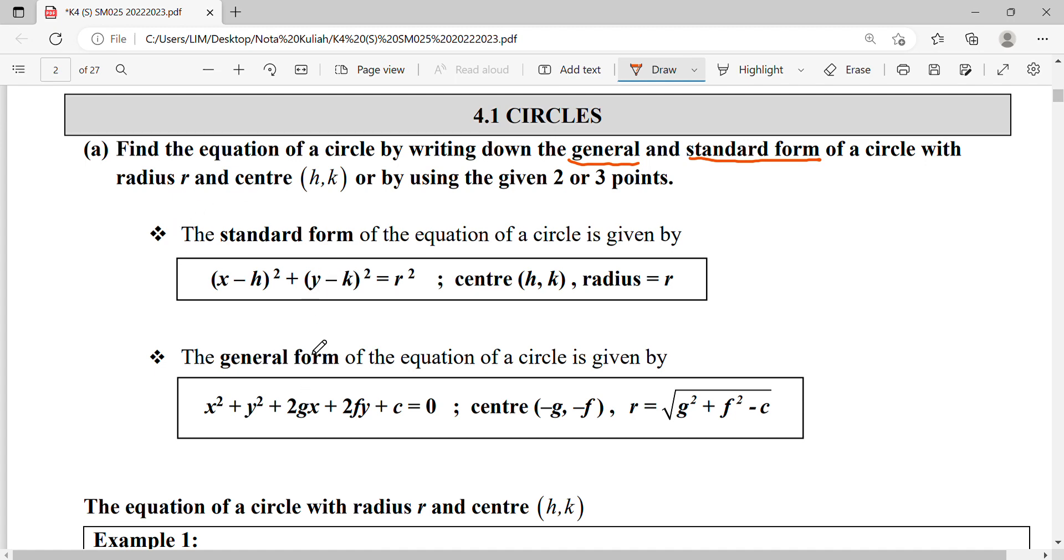With radius, symbol is r, center is (h,k), or by using two or three points. In doing circles, you must have radius, you must have center, then only you can find out what is your equation.